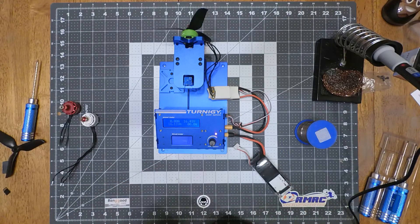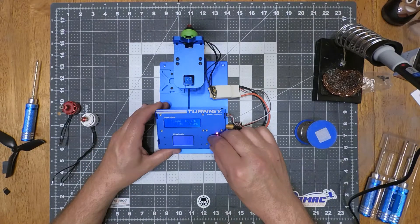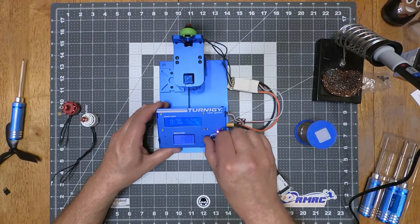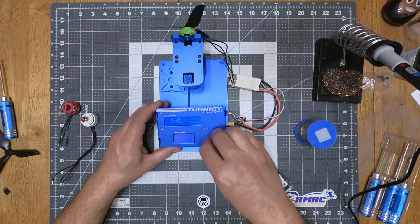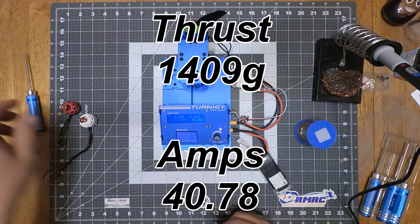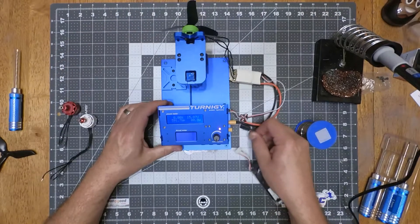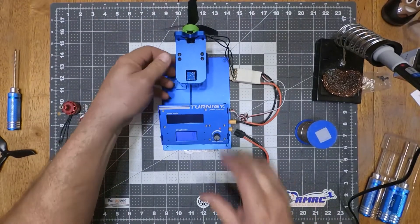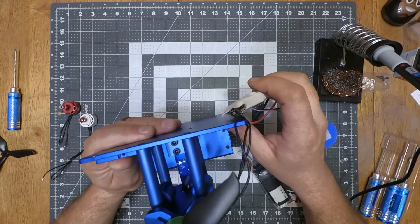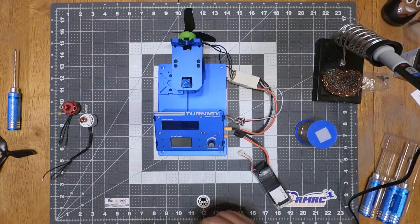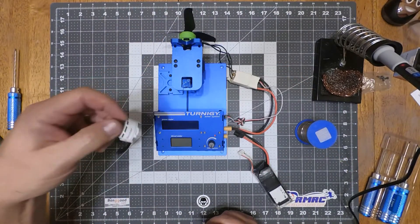Spin this one up. See what we get. And this is going to be with a Tri-Blade Racer Star. I believe it's a 5048. Yes, 5048. And now I'm going to switch over and I'll put this one on there.